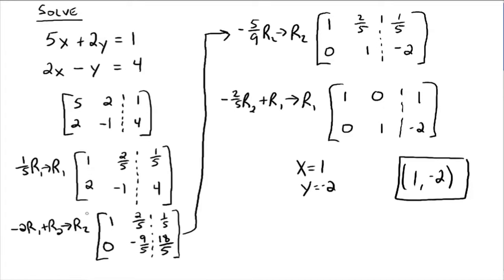then get the 0s in the rest of that column, then go to the next column. Get your 1 where you want it, get the 0s in that column, and then go to the next column. Get your 1 where you want it, 0s. That's expanding it out in terms of having systems bigger than just two equations and two unknowns.